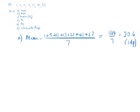Now the mode is the most frequent. There isn't a most frequent number — they're all as frequent as each other. They've all got 1 of each: 1, 5, 11, 13, 21, 41, 52. So there is no mode; there is not anything that is the most frequent.